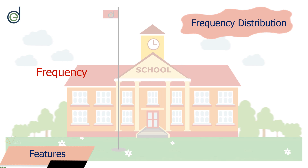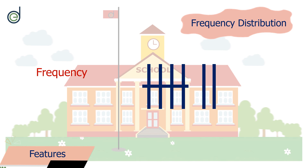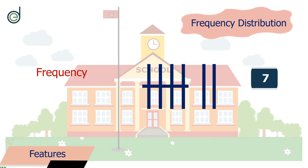What is frequency? Frequency is the number of occurrences of an event. In our example, seven students were born in the year 2006, which means the frequency is seven.